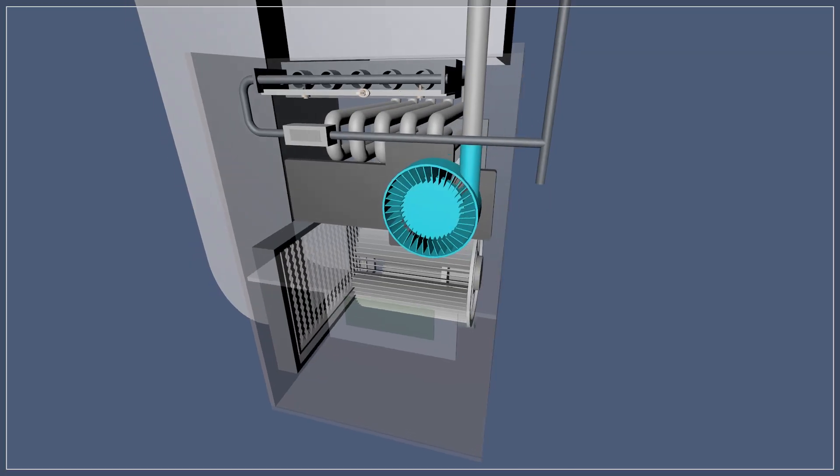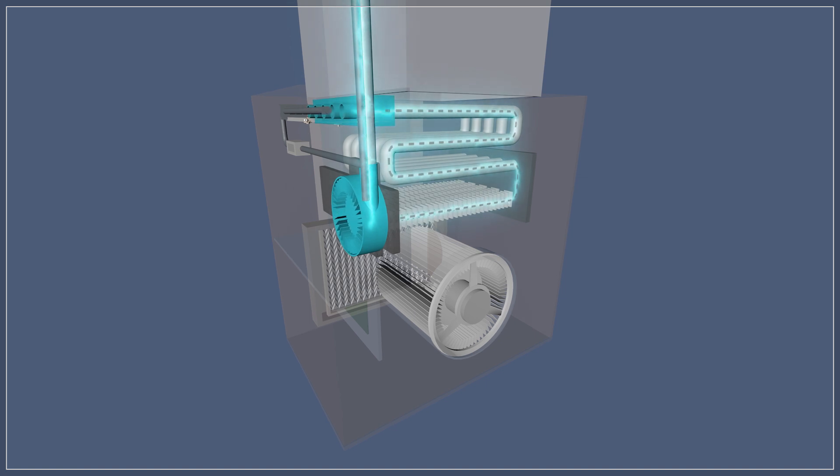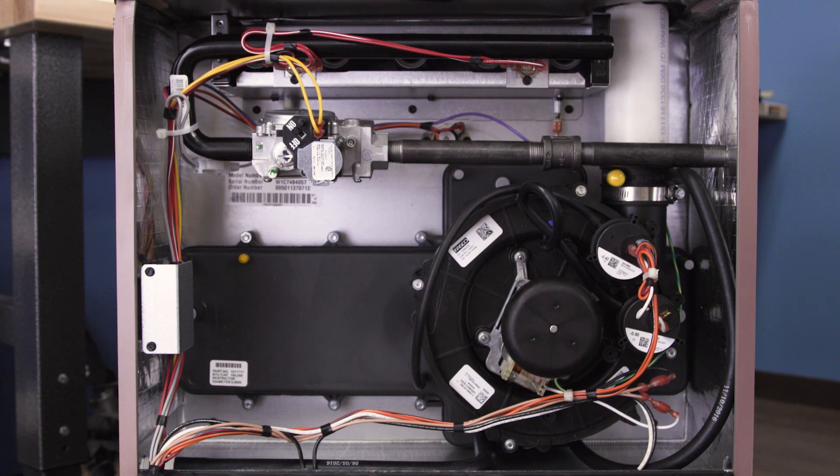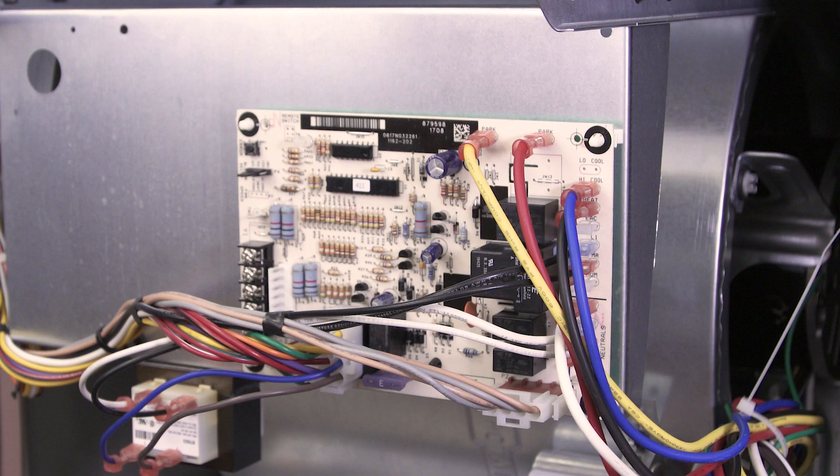If your furnace has power, then turn on the thermostat and observe the startup sequence. First, the draft inducer fan pulls air through the heat exchanger. This ensures that all fumes are exhausted during combustion. If the inducer isn't running, then the motor might be seized or burnt out. Additionally, the wires could be faulty or there could be a problem with the control board.